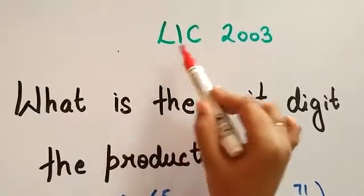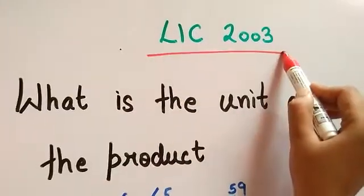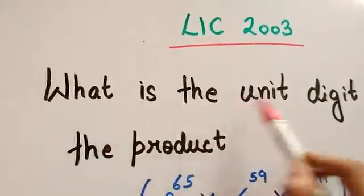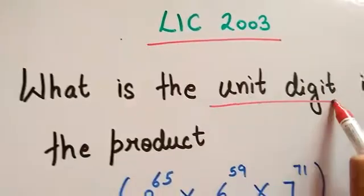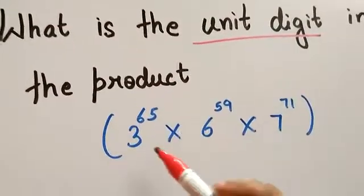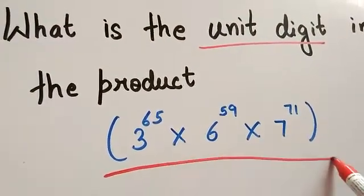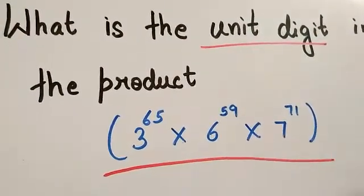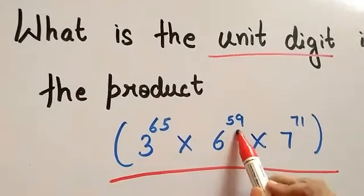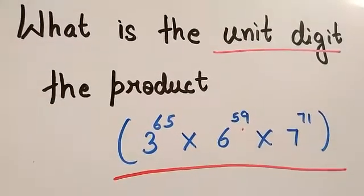This question has been asked in LIC 2003. What is the unit digit in the product 3 raised to the power 65, into 6 raised to the power 59, into 7 raised to the power 71?